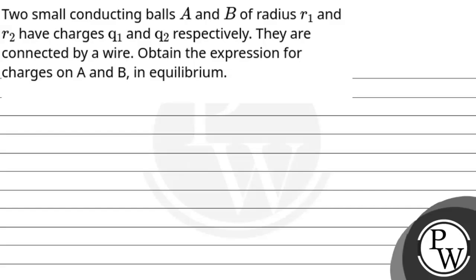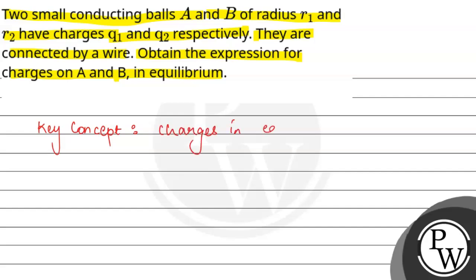Let's read this question. Two small conducting balls A and B of radius R1 and R2 have charges Q1 and Q2 respectively. They are connected by a wire. Obtain the expression for charges on A and B in equilibrium. Here we have a key concept: charges in equilibrium.